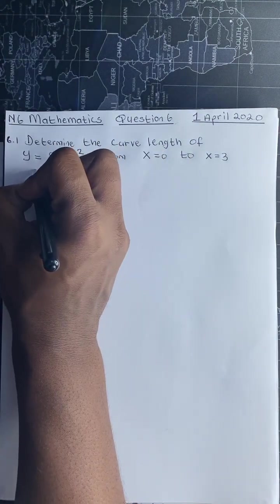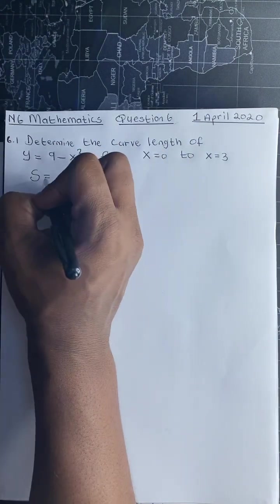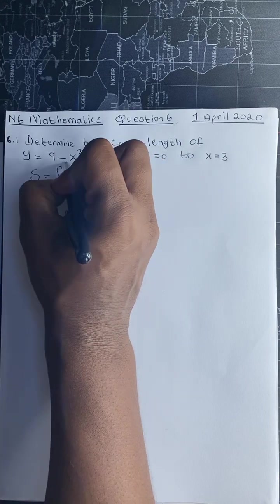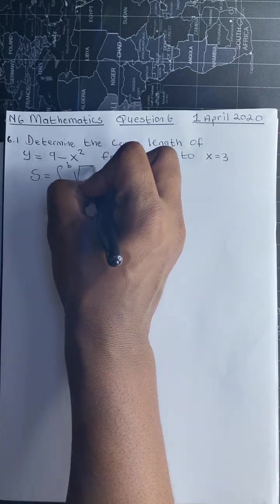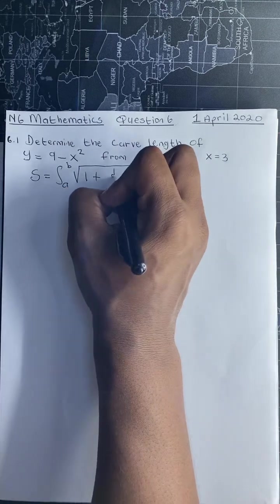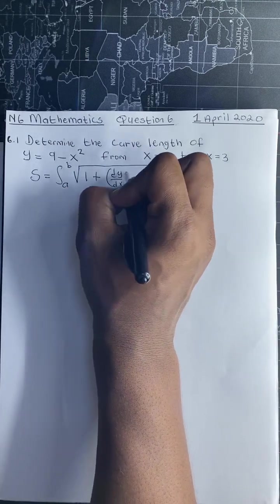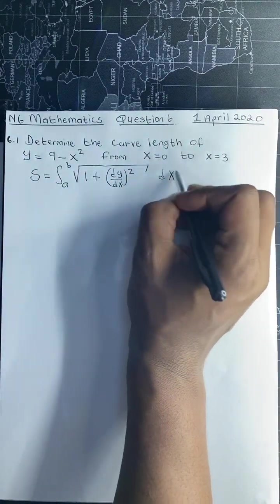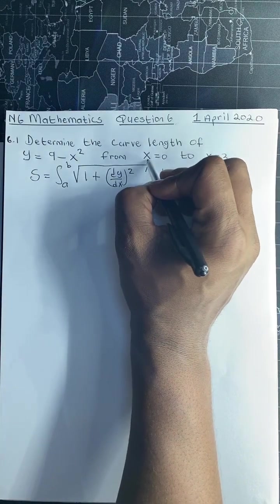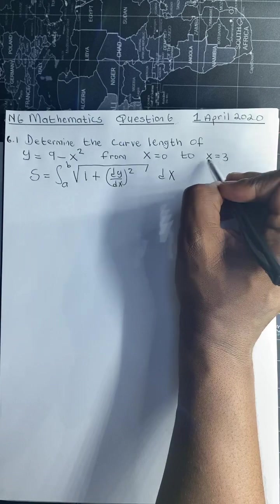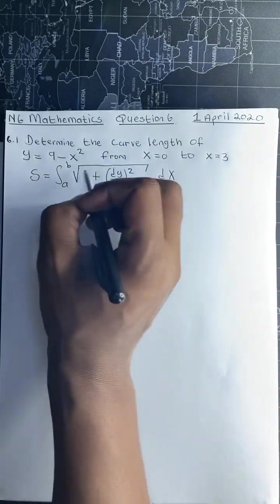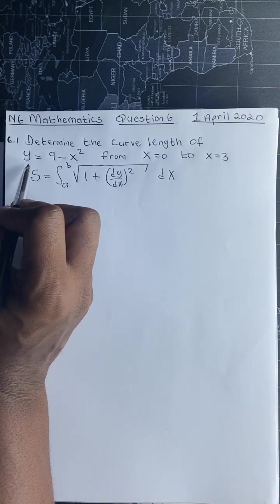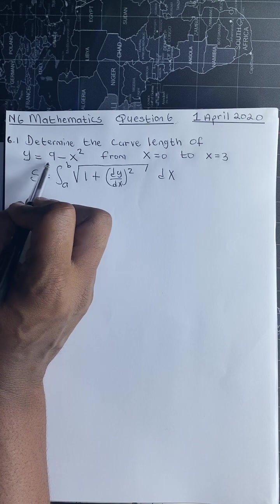From the formula sheet, the curve length is s equals the integral from a to b of the square root of 1 plus (dy/dx)² dx. We choose the formula with dx because our boundaries are x equals 0 and x equals 3, and we don't choose the parametric form since we are only given one equation, y equals 9 minus x squared.